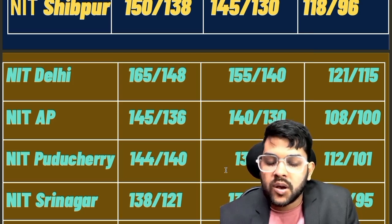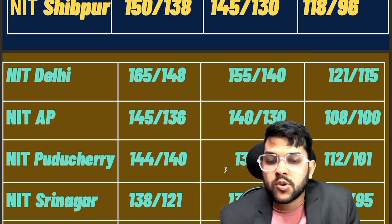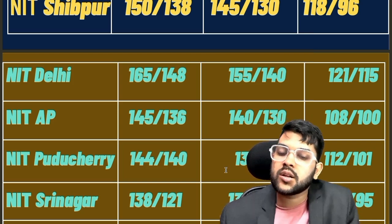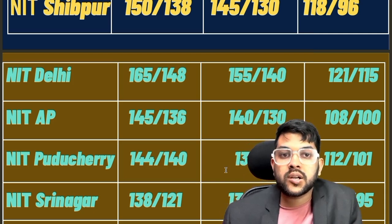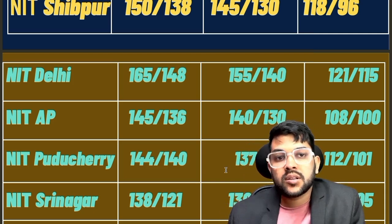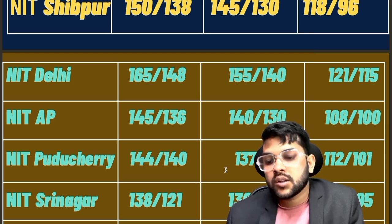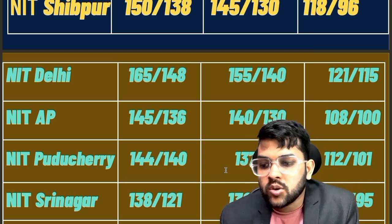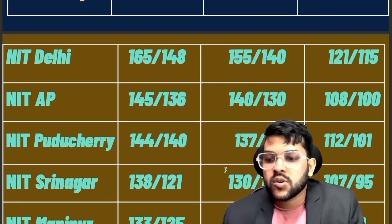These data I am taking reference from JOSAA counseling, not CSAB. In CSAB you may get at 5 to 10 marks less. If you score less than whatever I am discussing here, you can still hope for the college in CSAB, but in JOSAA counseling everything is confirmed. That's why I am confirming here — please try to target the marks I am discussing.